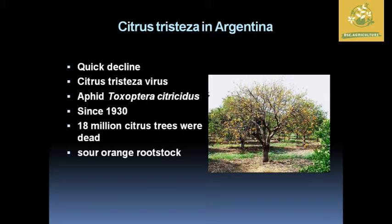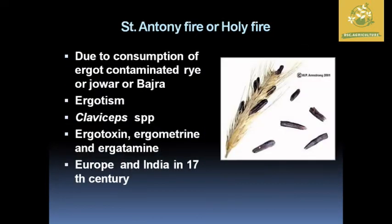Citrus tristeza disease in Argentina caused the quick decline of yield and leaves in citrus trees. It is mainly caused by Citrus tristeza virus, with Toxoptera citricidus as the vector. Since 1930, around 18 million citrus trees have died due to this disease, which also caused damage to sour orange rootstocks.